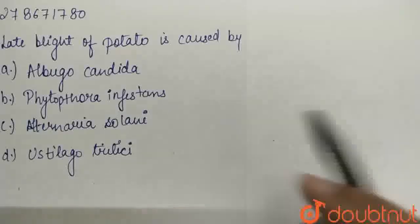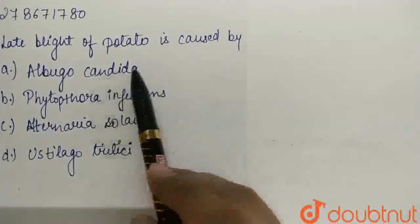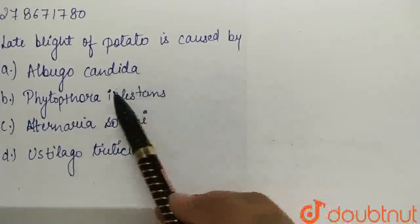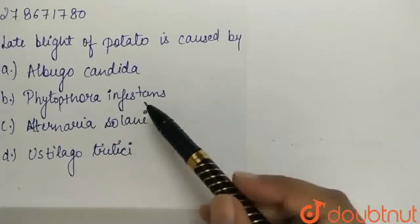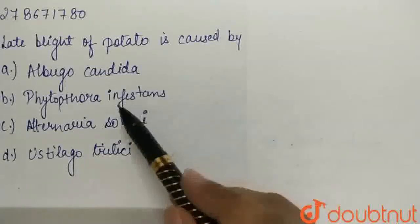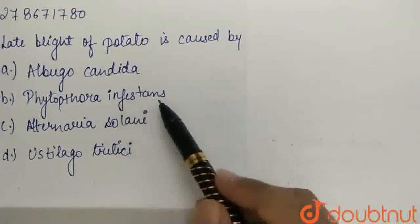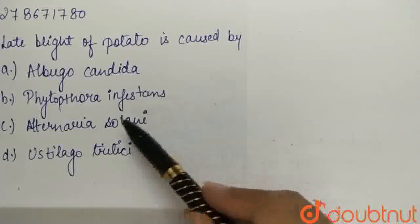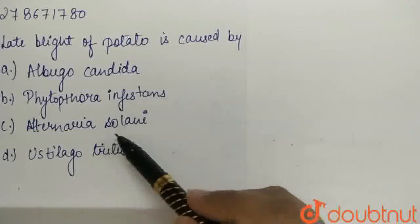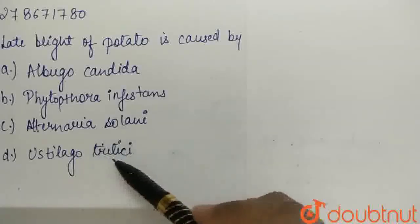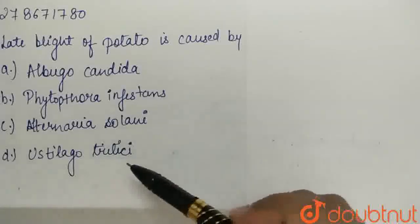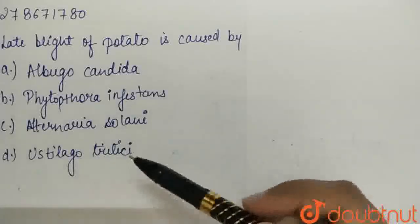So, the question is: Late blight of potato is caused by — A. Albugo Candida, B. Phytophthora Infestans, C. Alternaria Solani, D. Ustilago Tritici. So guys, let's talk about these 4 organisms.